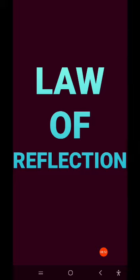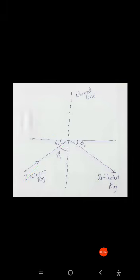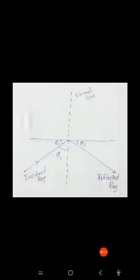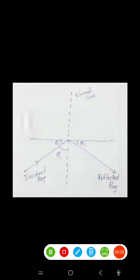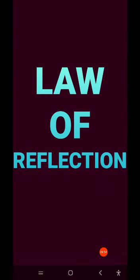Next is the law of reflection. Whenever I apply a light ray to the boundary, it will reflect back whenever the angle of incidence is greater than the critical angle. At that time, the angle between the boundary and the incident ray is equal to the angle between the boundary and the reflected ray. Both will be equal — that law is called the law of reflection.